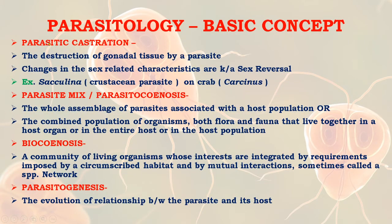Parasitic castration is the destruction of gonadal tissue by a parasite. Changes in sex-related characteristics are known as sex reversal. An example is Sacculina, which is a castration parasite on the crab Carcinus. Next, parasite mix or parasitocenosis is the whole assemblage of parasites associated with the host population, or the combined population of organisms — both flora and fauna — that live together in a host organ, the entire host, or host population.